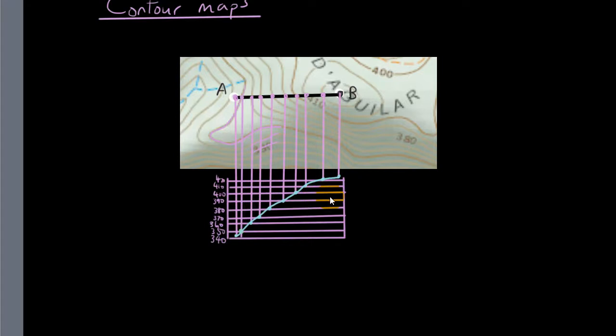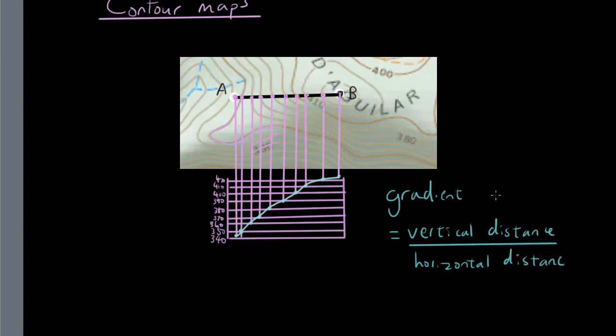There are a few things we can work out here. The first thing we want to work out is the gradient. Gradient is basically the vertical distance divided by horizontal distance, and you need two points. We're finding the gradient of A to B. What is the vertical distance? Well point B has a height of about 425 meters, so 425 meters is point B minus point A, which has a height of 345.